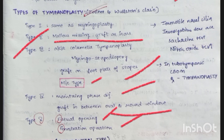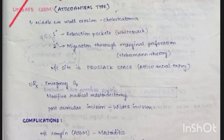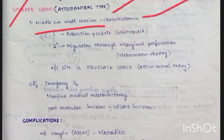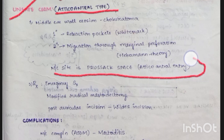Mucosal (safe) CSOM is also known as tubo-tympanic CSOM; best treatment is tympanoplasty. Unsafe CSOM (atticoantral type) shows middle ear wall erosion — this is cholesteatoma. Primary cholesteatoma forms retraction pockets — this theory is known as Wittmaack's theory. Secondary cholesteatoma forms by migration through marginal perforation — Habermann's theory. Most common site is Prussak's space, atticoantral entry.